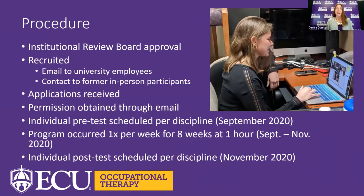After receiving approval for the study, we recruited participants from the in-person program canceled the prior spring, and also sent an email to university employees. We gathered parent permission and child assent electronically. Participants were all pre-tested in August or September through separate speech and occupational therapy virtual sessions, conducted within two weeks of the program beginning. The program occurred during the fall semester — September through November — for eight weeks. Post-testing occurred in November in the same manner as pre-testing.